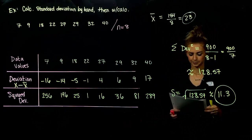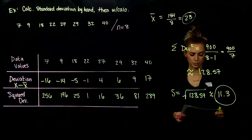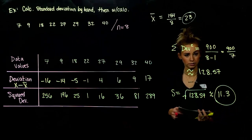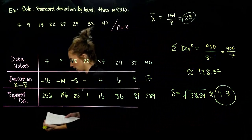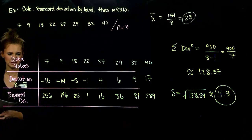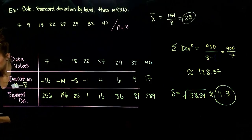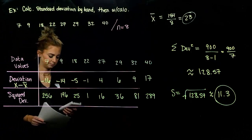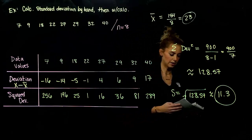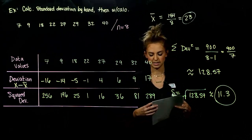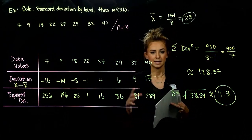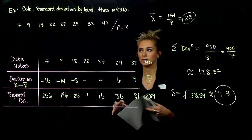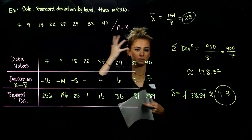The calculator can do it for us, so pull out your TI-84, 86, or something similar, and we'll run through that process of having the calculator do the work for us — it's a lot faster. The very first thing we want to do is input our data set into the calculator.